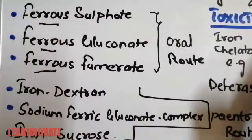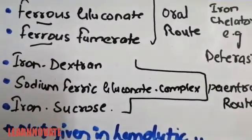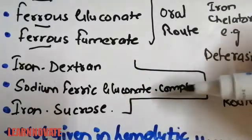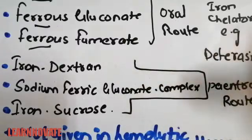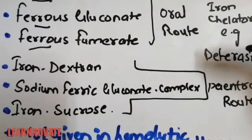Now the second one is the parenteral route. Here you can see this is the parenteral route in which again three drugs are important: iron dextran, sodium ferric gluconate complex, and iron sucrose. These three drugs are induced parenterally in the body of an iron deficiency anemic patient.